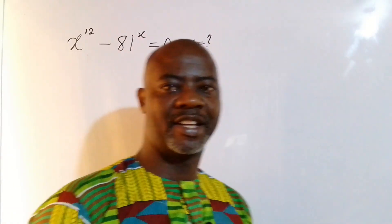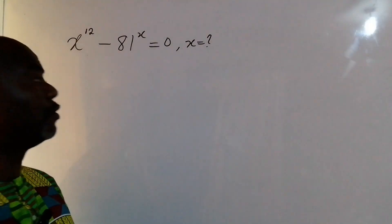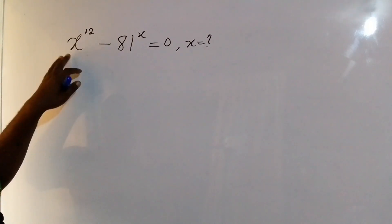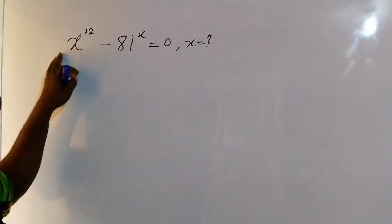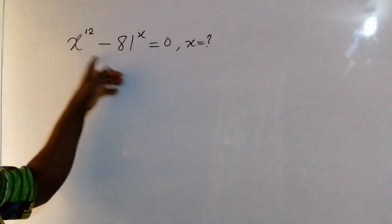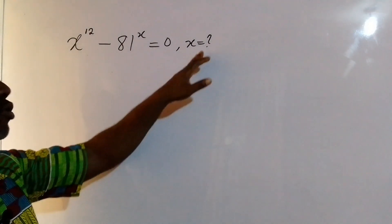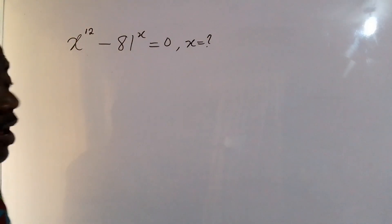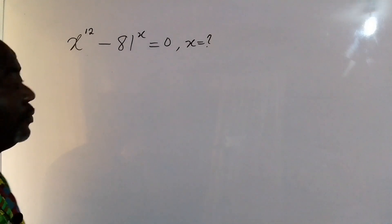Hello guys, welcome back once again. Before us is a beautiful exponential equation and we have to find the value of x. So if you have x to the power of 12 minus 81 to the power of x equal to 0, what would be the value of x? Let's see how this is done.